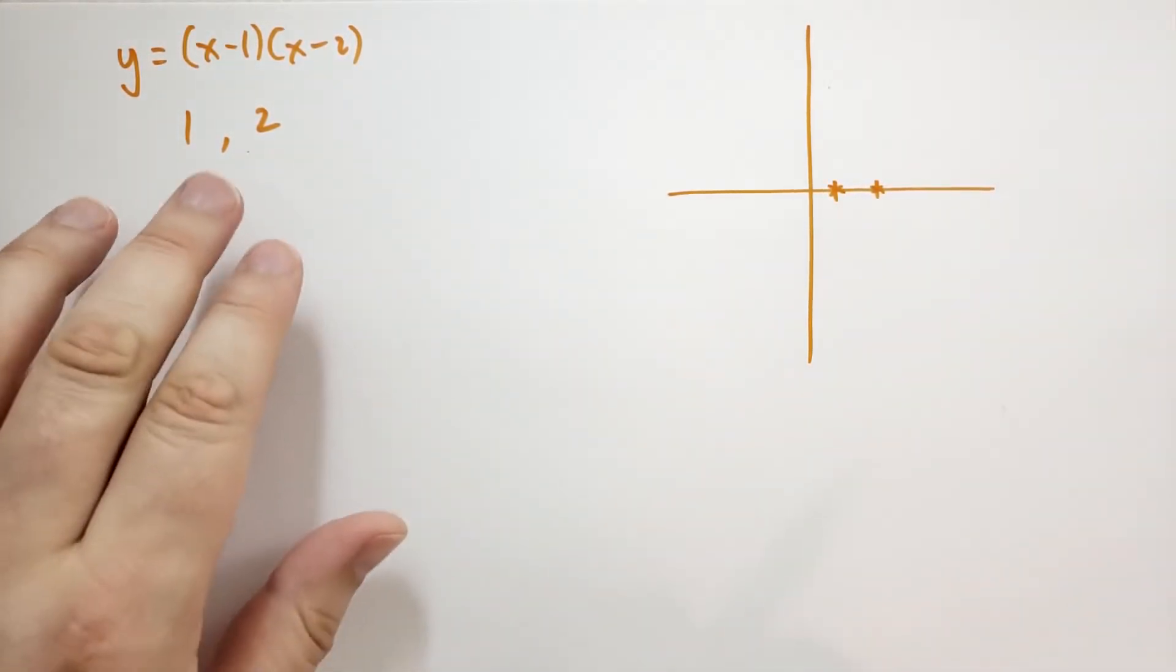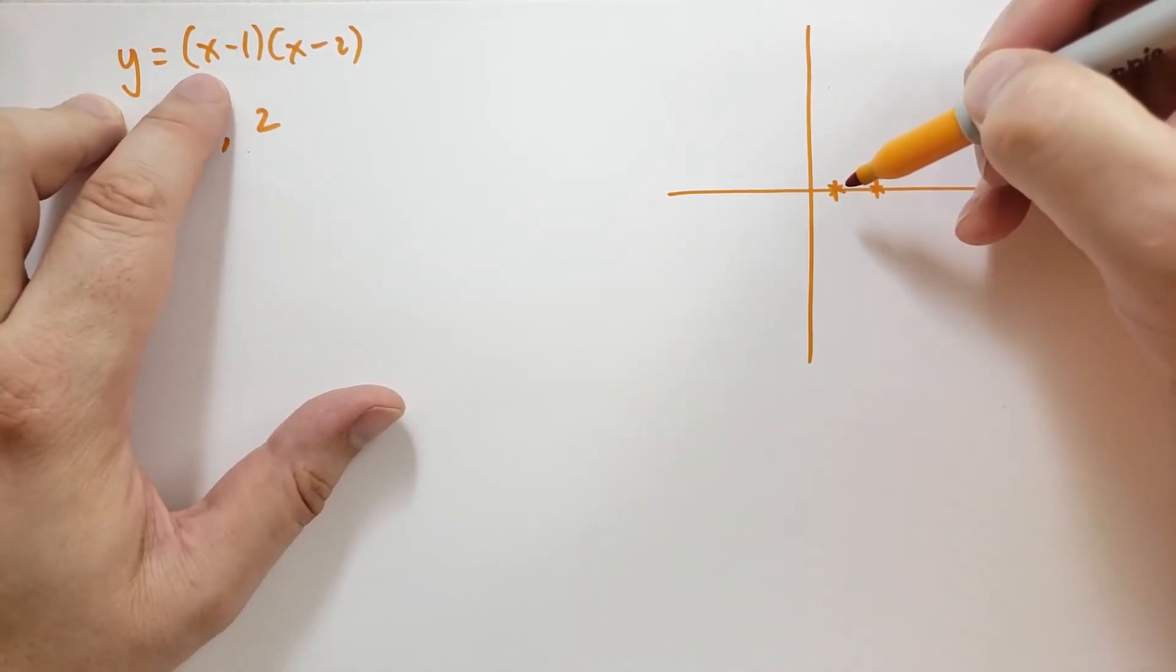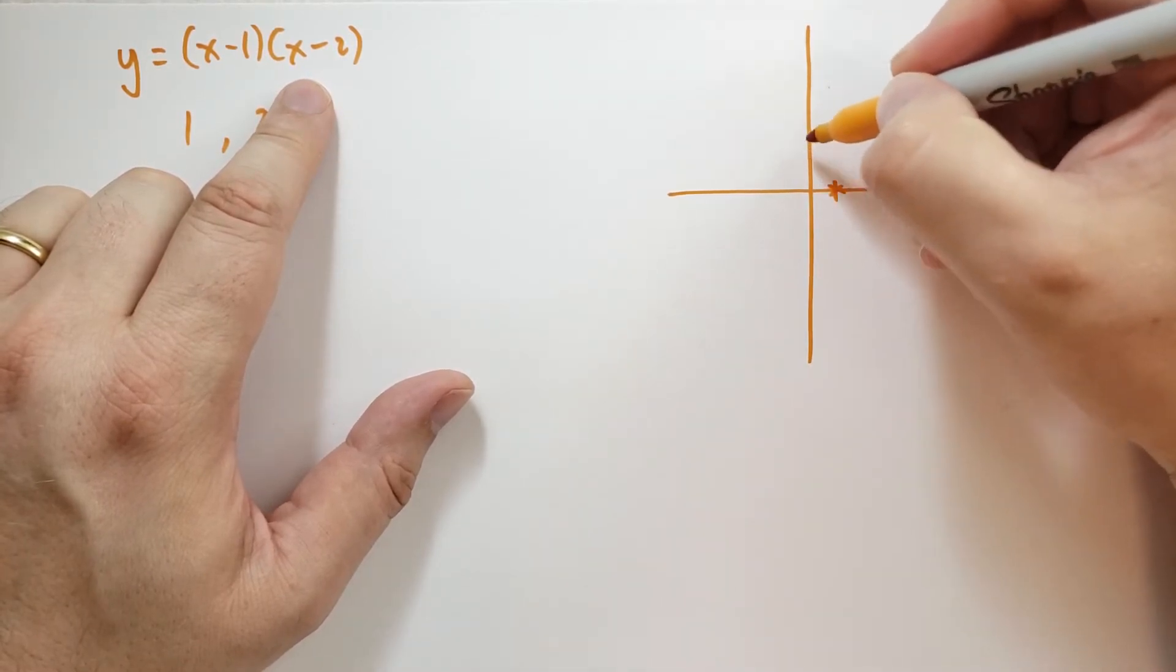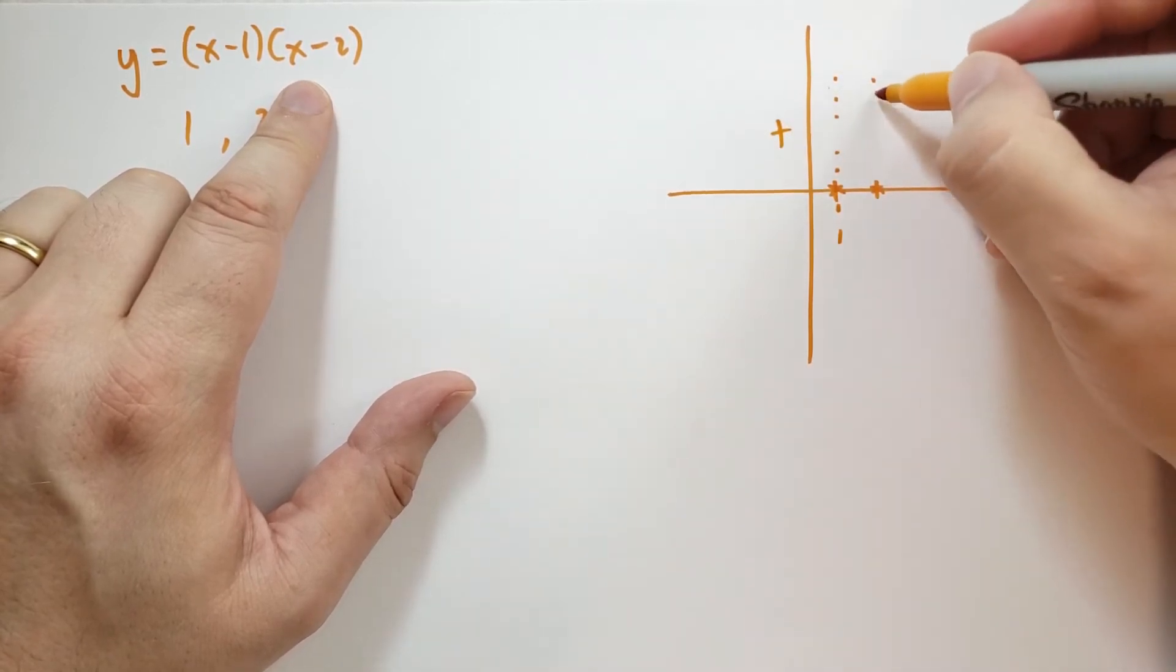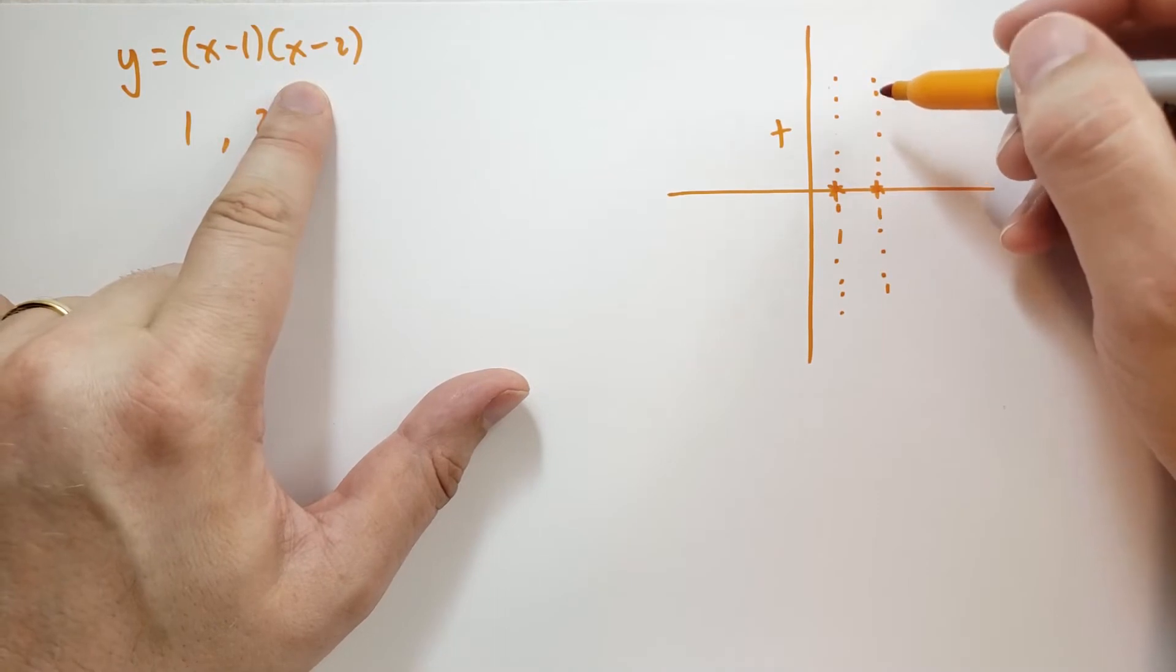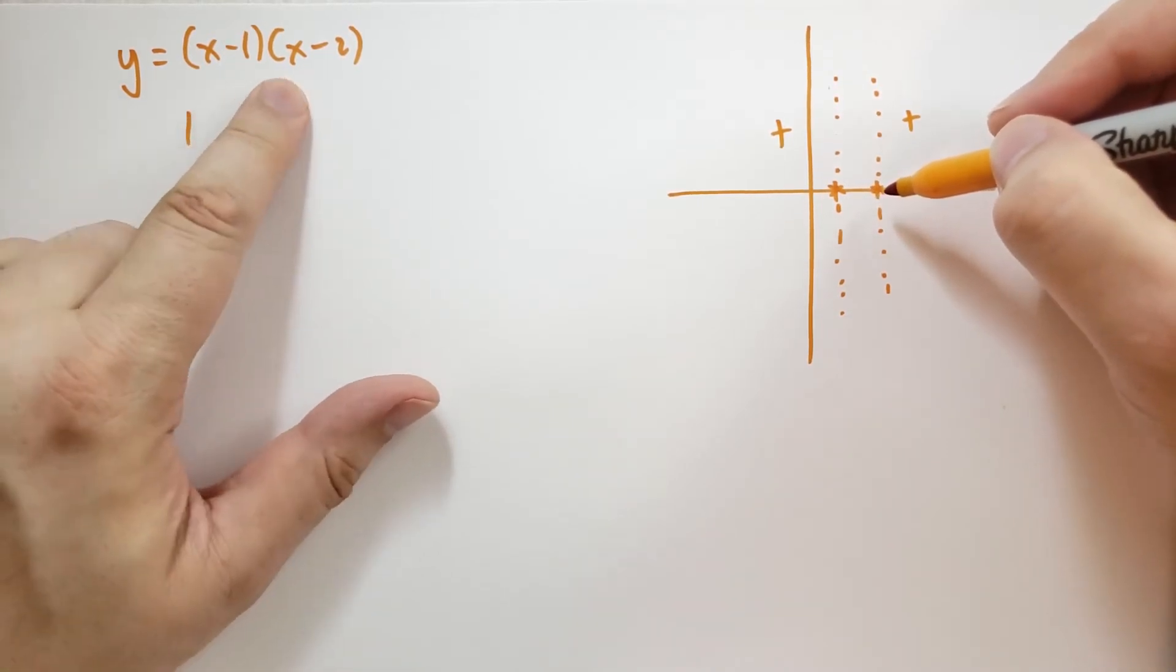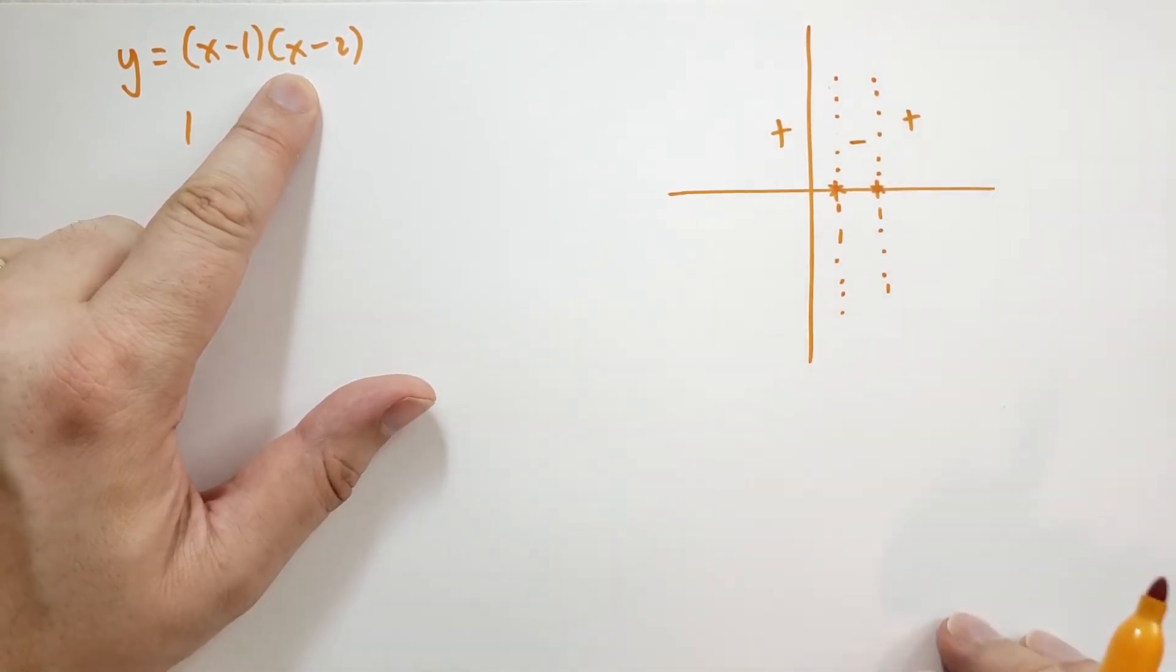The next question we're going to have is, is it positive or negative in these different areas? So below x equals 1, x minus 1 would be negative, x minus 2 would be negative, so we're going to have a negative times a negative, so it's going to be positive. So in this region here, it's going to be positive. And when x is greater than 2, this is going to be positive, that's going to be positive, so this is also positive. But between x is 1 and x is 2, one of them is going to be positive, one is going to be negative, so we have a negative times a positive, so it's going to be negative there.